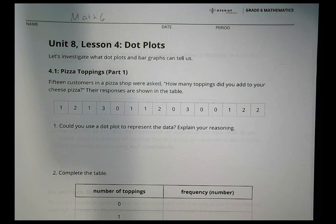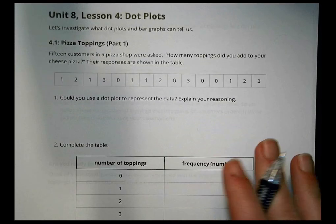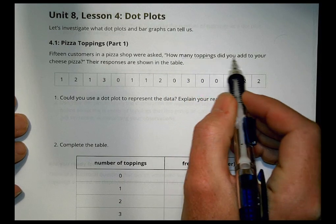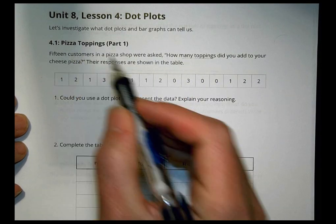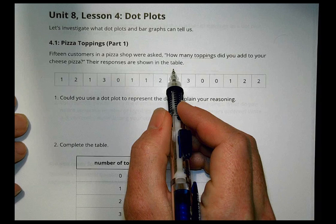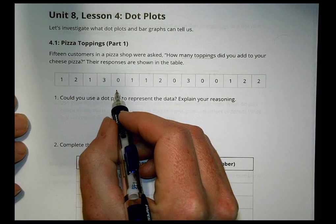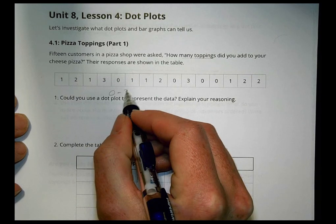Hey, this is Math 6, Unit 8, Lesson 4 on Dot Plots today. First of all, it says 15 customers in a pizza shop were asked, how many toppings did you add to your cheese pizza? And the responses are shown in this table. We have 1, 2, 1, 3, 0. So we have a variety of numbers here, basically from about 0 to 3.